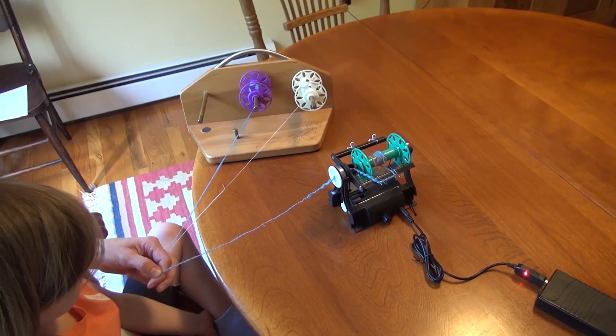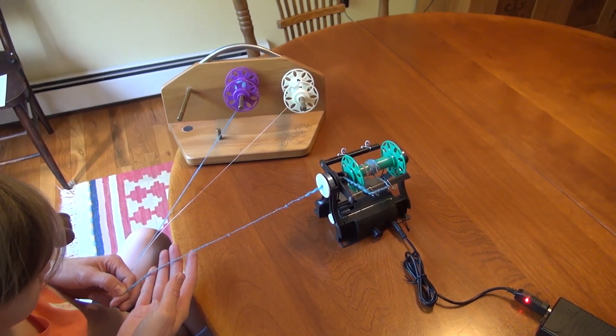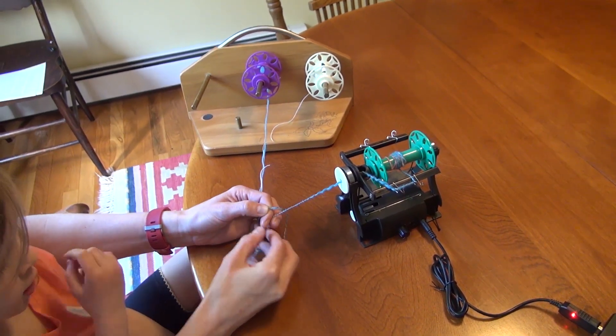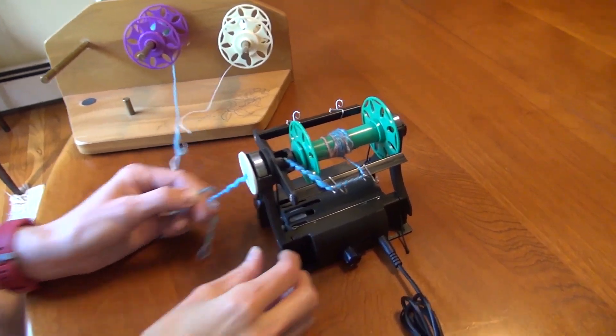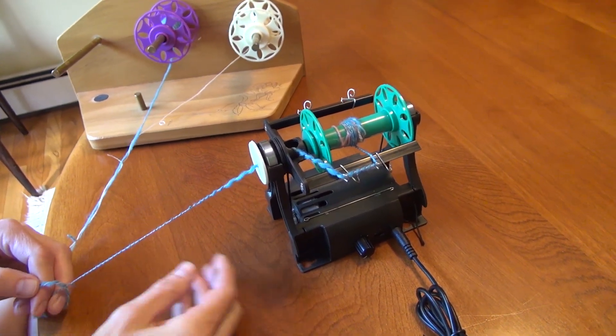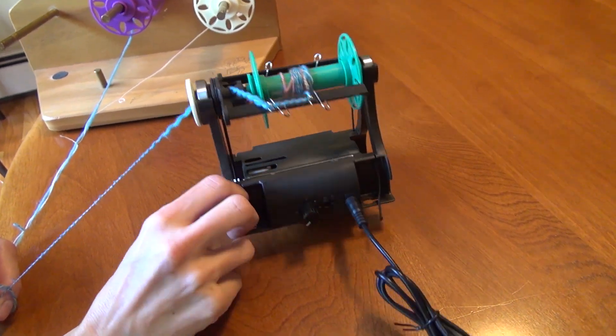When you eventually get a few bobbins full of single threads it is time to combine or ply those threads into yarn. While plying, as we said earlier, you want to set the Nano to spin in the opposite direction as the singles. So in this case we're going to set the switch to S-twist.